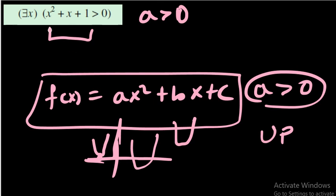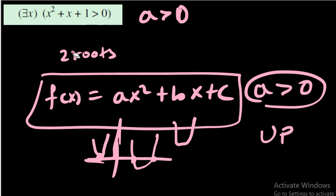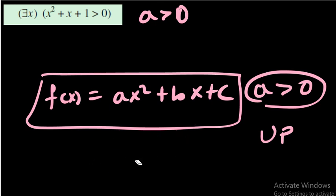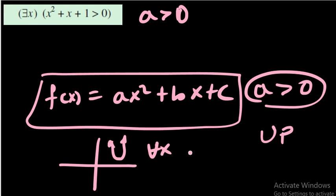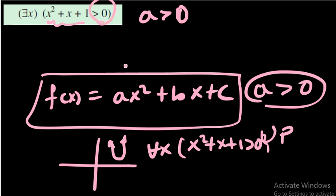When we tried to solve this quadratic, we got no real roots, meaning the graph is completely above the x-axis. Therefore, for all x, x² + x + 1 > 0 is true — the graph being entirely above the x-axis means for every x the expression is always positive.